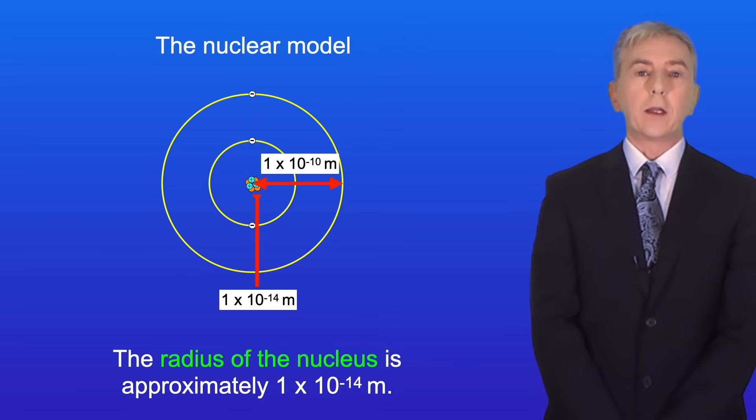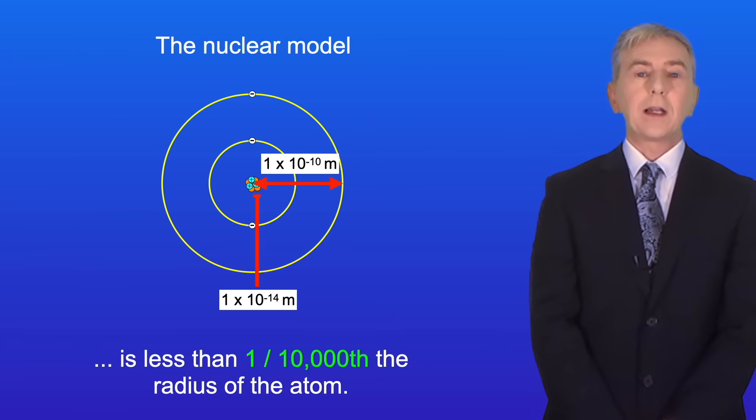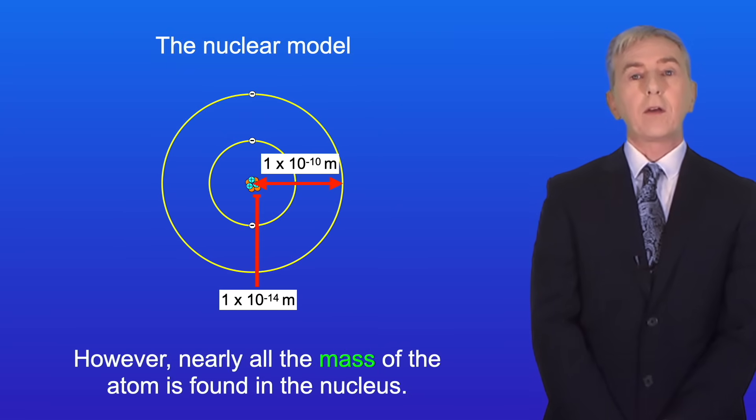The radius of the nucleus is approximately 1 times 10 to the power of minus 14 meters. So the radius of the nucleus is less than 1/10,000th the radius of the atom. However nearly all the mass of the atom is found in the nucleus.